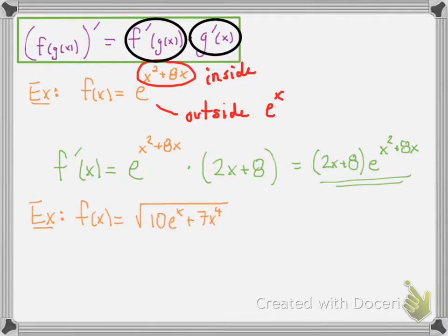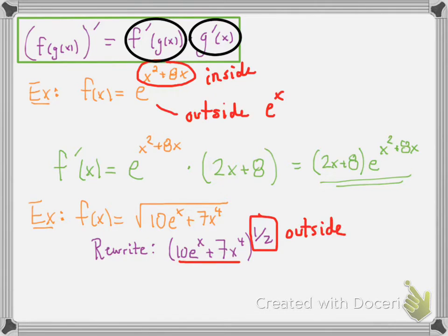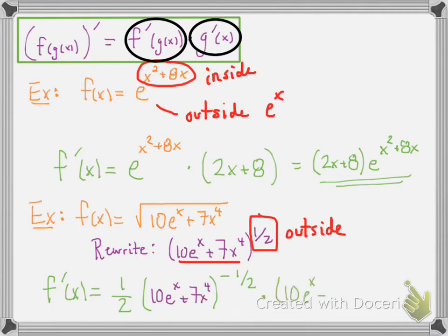Let's take a look at another one we haven't seen yet: the square root of 10e to the x plus 7x to the 4th. To take the derivative you have to rewrite it first. We don't have rules for square roots, but you rewrite it as the inside part to the 1 half power. With parentheses like this it's easy to isolate the inside and outside pieces — the inside is underlined and the outside is the 1 half power. Bring the 1 half down in front, subtract 1 from the exponent for the derivative of the outside, leave the inside alone, then multiply by the derivative of the inside.